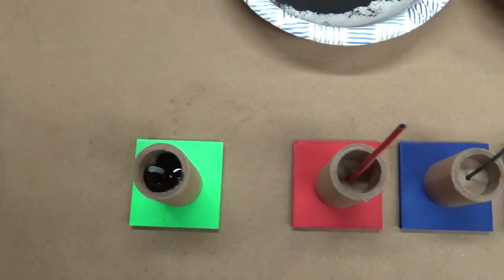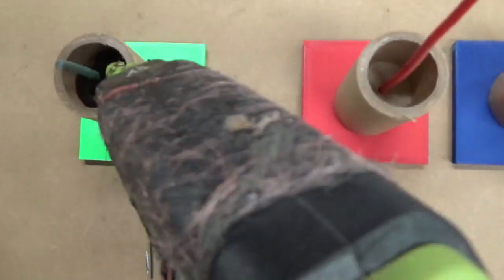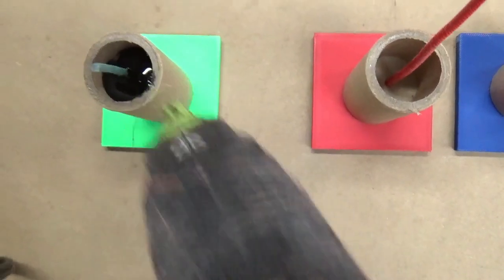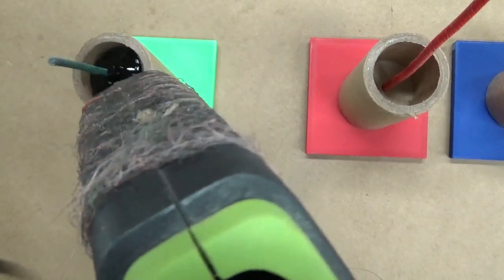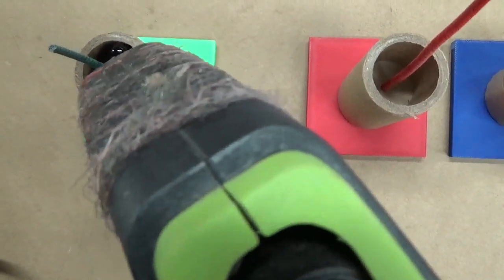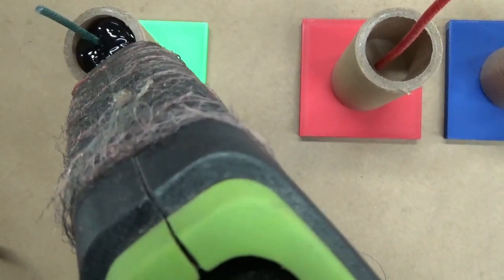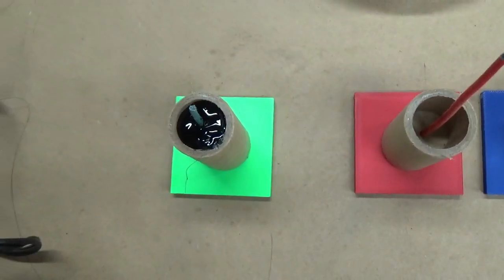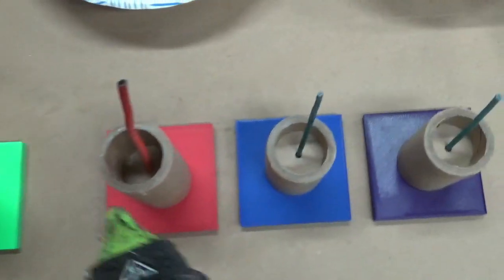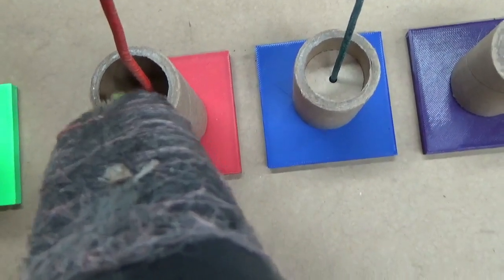And the nice thing about these stands is you can do multiple at once. Just filling them up with hot glue. You can actually get pretty quick at this. I'm going to center your fuse here. Just go right down the line, filling things up.